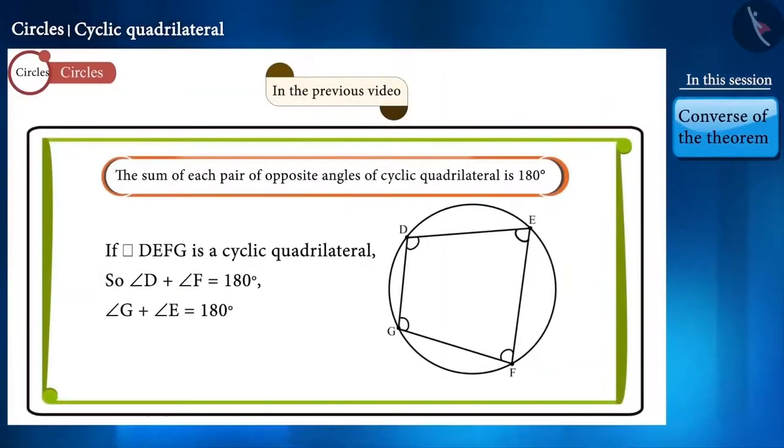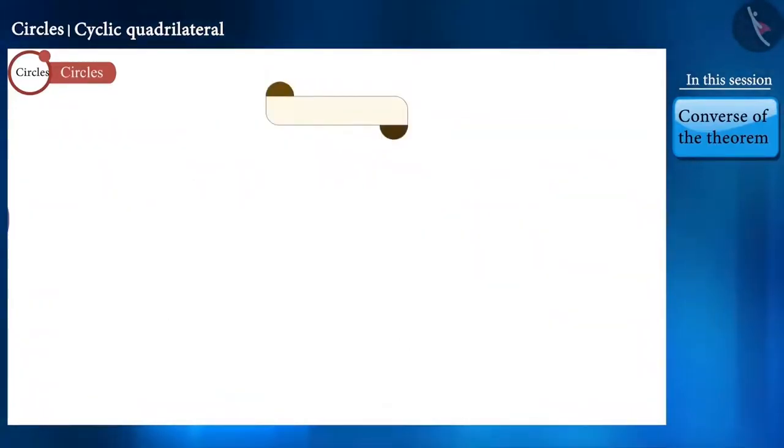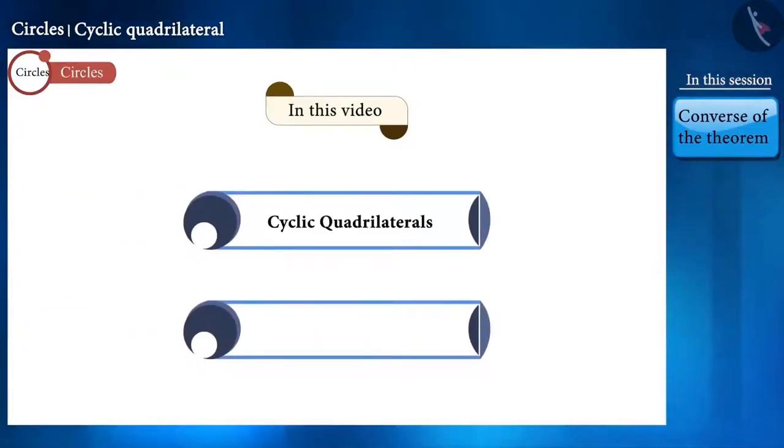In the previous video, we learned that the sum of each pair of opposite angles in a cyclic quadrilateral is 180 degrees. Today we will discuss the converse of this theorem.